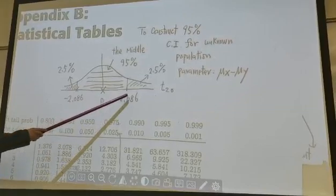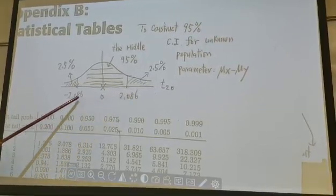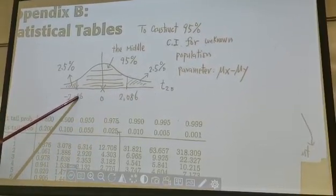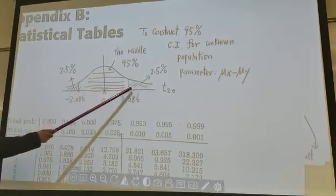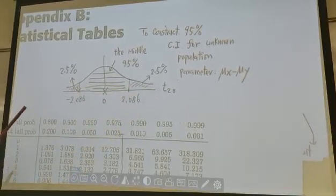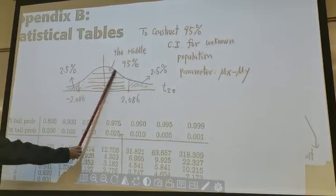So from 2.086 to minus 2.086, the lower tail 2.5%, the upper tail is also 2.5%. So from here to here to here, cover the middle 95%.